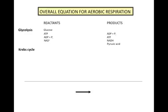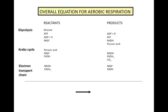The Krebs cycle is the next stage in cellular respiration. It begins with pyruvic acid. NAD+ gets reduced in the Krebs cycle to NADH. FADH also gets reduced to FADH2. CO2 is released in the Krebs cycle as well. The electron transport chain is the third stage in cellular respiration. It begins with the oxidation of NADH into NAD+ and FADH2 into FADH. Oxygen serves as the final electron acceptor in the electron transport chain, producing water. Finally, ADP and inorganic phosphate produce ATP.